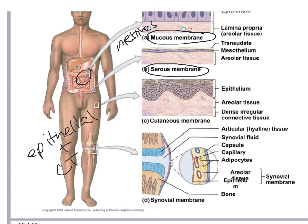We also have a serous membrane. The epithelium is on top and connective tissue beneath — half epithelial, half connective tissue. Examples of serous membranes include the pericardium, pleura, and peritoneum.